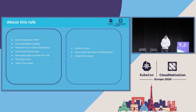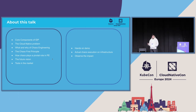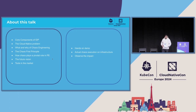Moving on to the agenda. We'll be covering the core components of IDP, talking about the cloud-native problem and why we're introducing chaos engineering, the what and why, the chaos-first principles, and then how we can introduce chaos in a hands-on demo and talk about the vision and tools that are in the market. The tools are just an abstract view — you can integrate your own tools; it's not vendor-specific. We'll also execute chaos and observe the impact on a Grafana dashboard, hopefully if the demo gods are happy.